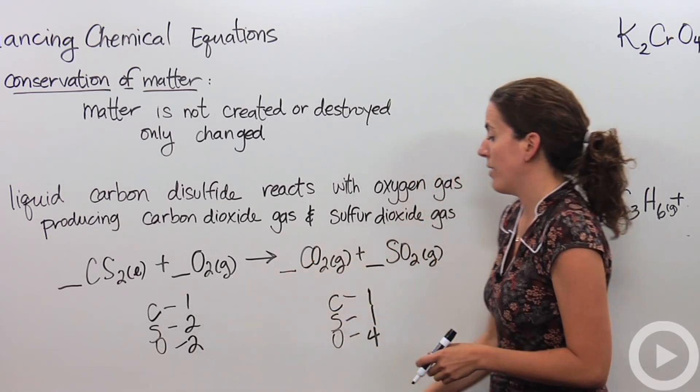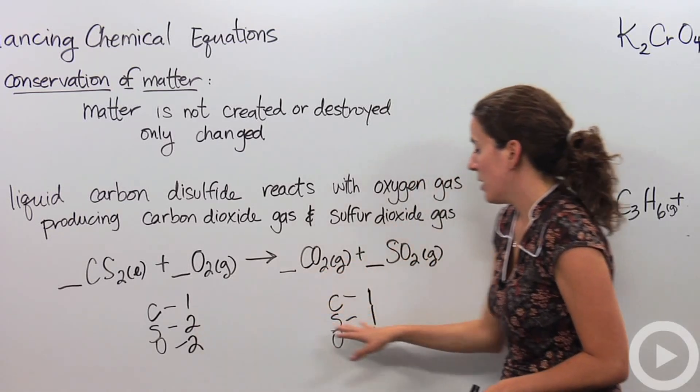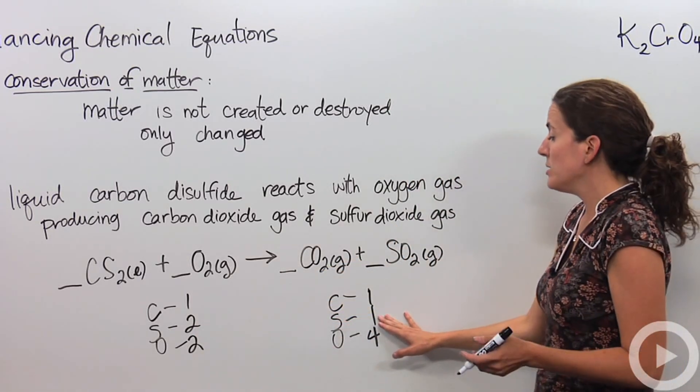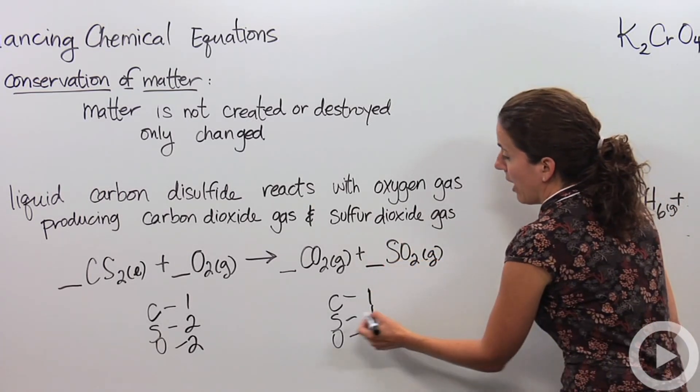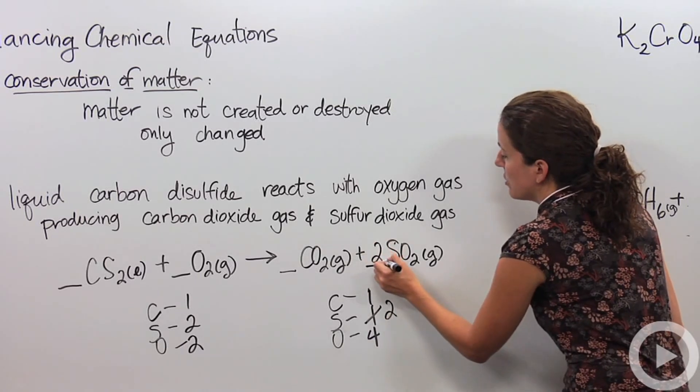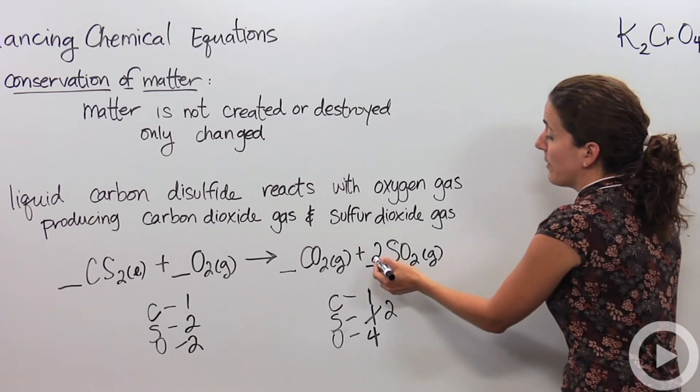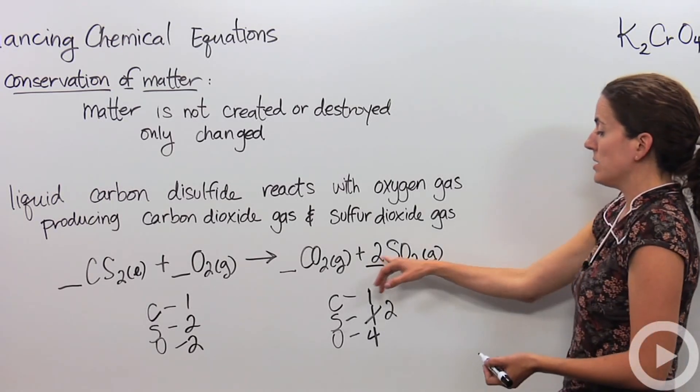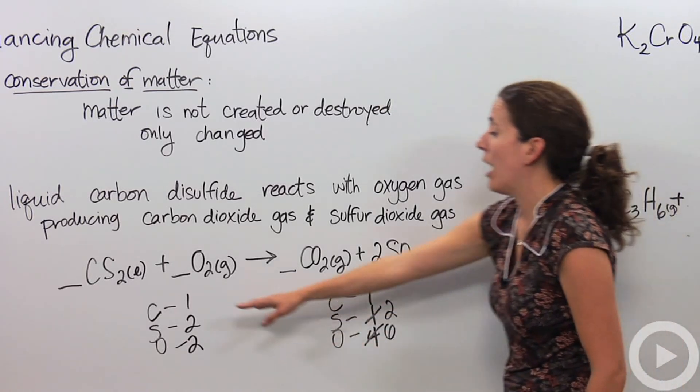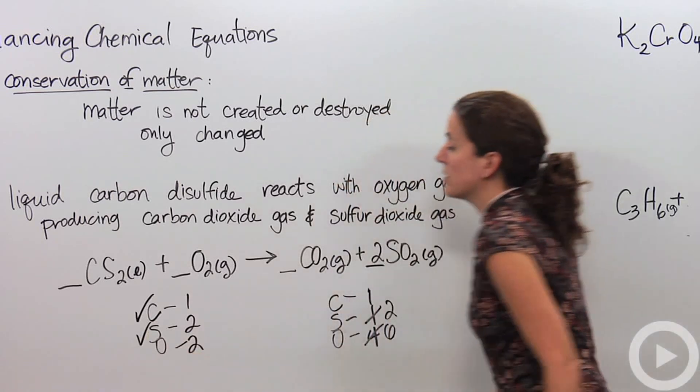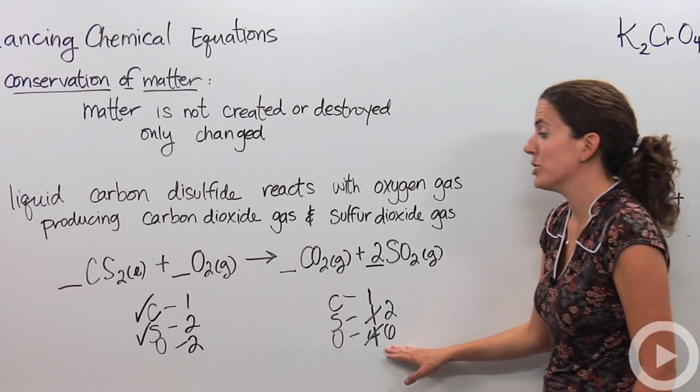So right now the carbons are balanced. We have one carbon on the reactant side and one on the product side, so we're good there. Looking at sulfur, we have two sulfur atoms and we have one sulfur atom over here, so we have to change that. The place we change it is before the compound, right here. So I have two on that side, I want to make two on this side, so I'm going to put a two here. That tells me I produced two sulfur dioxide particles, so two sulfurs, but then I also change the oxygen. So we have four now, plus that other two, which is six. So now our carbons are balanced, check. Our sulfurs are balanced, check. We want to make sure our oxygens then are balanced. We have two on the reactant side and six on the product side. I'm going to change that.